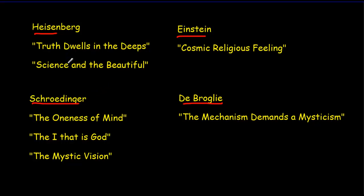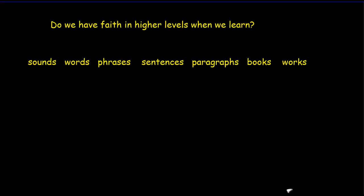In the case of Max Planck, this seems to be a faith in a higher order, in an intelligence to the universe itself. In fact, many of the pioneers of quantum physics were deeply affected in this same way. If we look at some of the titles of essays and chapters that Heisenberg, Einstein, de Broglie, and Schrödinger wrote: 'Truth Dwells in the Deeps,' 'Science and the Beautiful' by Heisenberg; Schrödinger wrote 'The Oneness of Mind,' 'The Eye That Is God,' 'The Mystic Vision'; Einstein wrote about 'The Cosmic Religious Feeling'; de Broglie wrote about mechanism and mysticism. They all found a kind of spirituality, a kind of higher order within the universe. That's what quantum physics for them pointed towards.